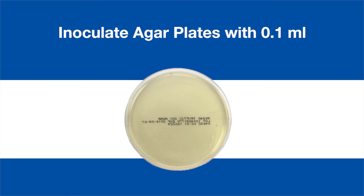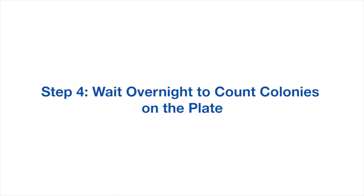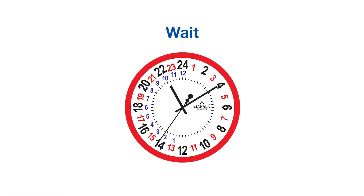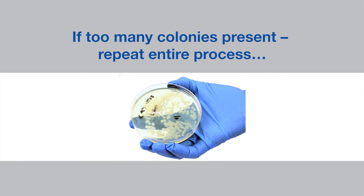Inoculate your agar with 0.1 milliliters from the last serial dilution tube. You should obtain 10 to 100 colonies after incubation. Incubate the agar plate overnight, or longer if you have a slow-growing microorganism. If there are more than 100 colonies after incubation, the whole process must be repeated. So there you have the manual method — taking a lot of time and effort and hoping for good results.